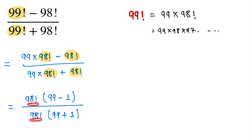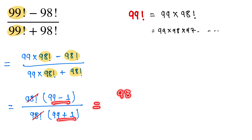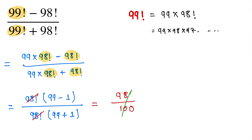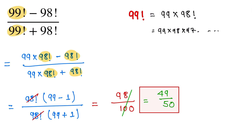The 98 factorial terms cancel out, so we are left with (99 minus 1) over (99 plus 1), which equals 98 over 100, and simplifying that gives us 49 over 50.